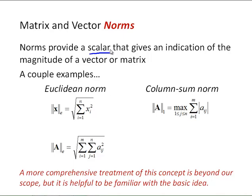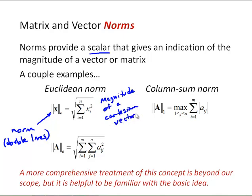There's lots of examples of norms that are useful for different purposes. I've provided a few examples here. The double lines indicate a norm in terms of notation. So the Euclidean norm is something you should be familiar with if you thought of say the magnitude of a Cartesian vector. We've covered Cartesian vectors in say statics or physics. This is the square root of the sum of the squares of the individual elements.